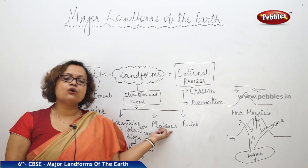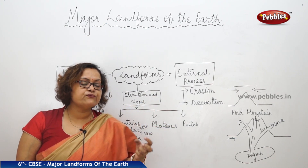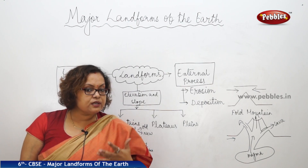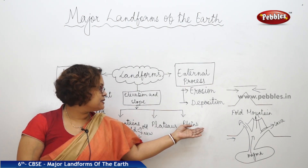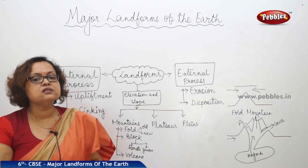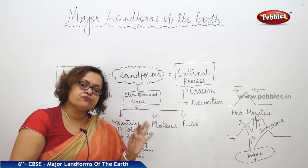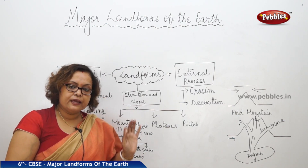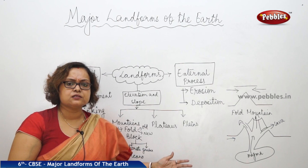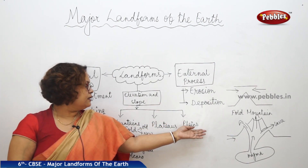Plateaus are also very helpful — people settle there and the black soil is good for agriculture. Plateaus are also enriched with minerals needed for development. Plains, as we know, are where most major cities are located — transportation and basic amenities are easily available. Rivers carry alluvial soil to the plains, making them very good for agriculture.